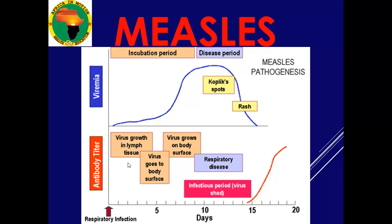How do you know that someone has measles? Regarding diagnosis: the incubation period from the time of infection is at least 10 days before signs start showing. What happens is the virus enters, continues to multiply, and reaches its high peak on day 10.